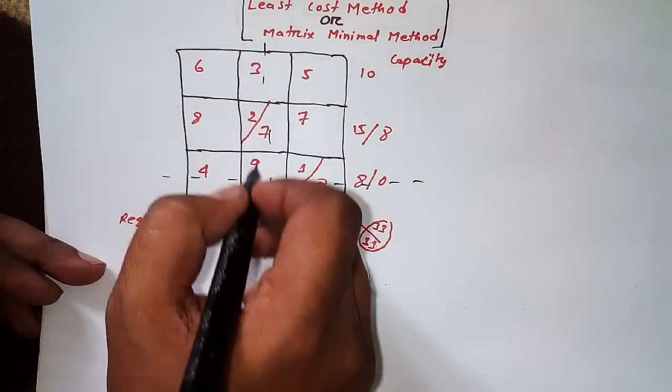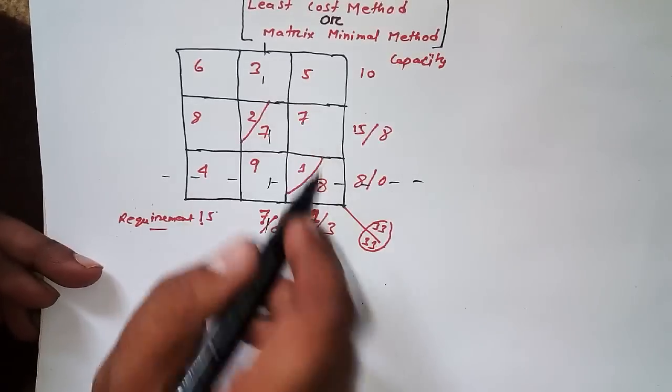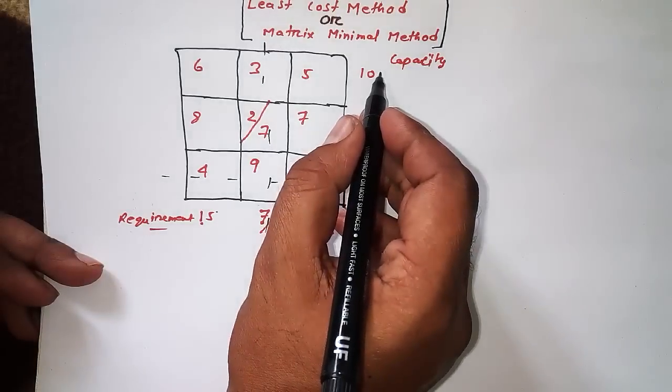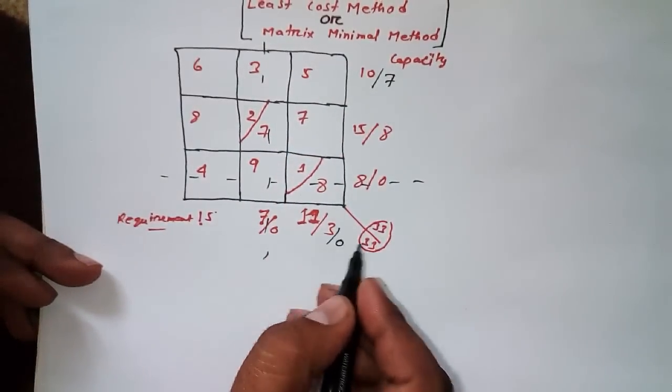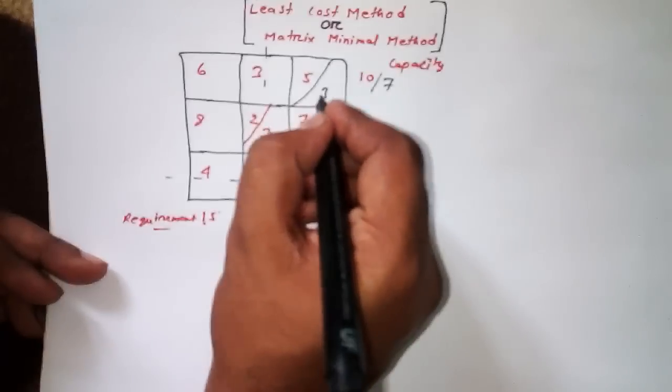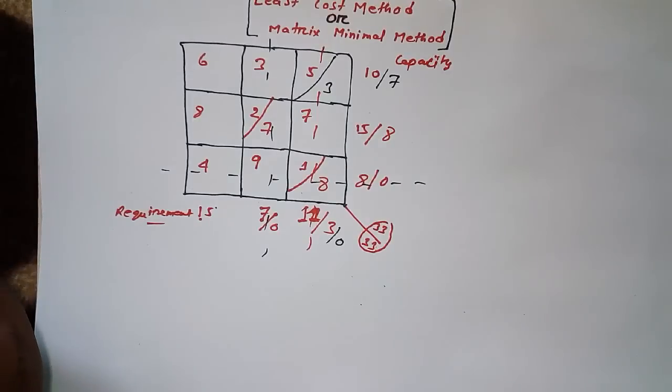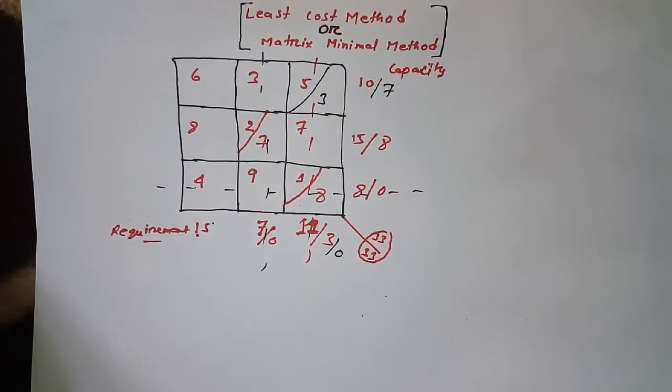Next, I find the next minimum number. We have only two boxes remaining, 6 and 8, so minimum is 6. I check capacity and requirement - capacity is 7 and requirement is 15.